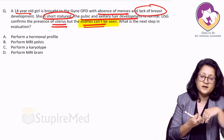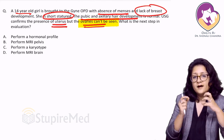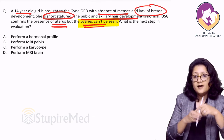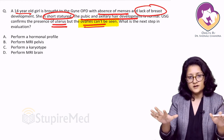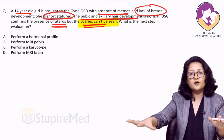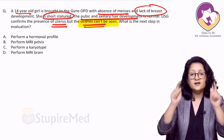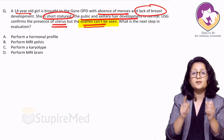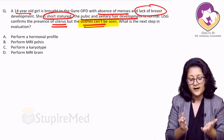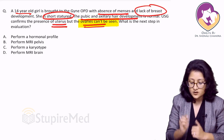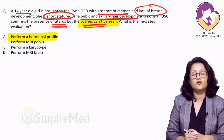What is the next step in evaluation? If there is estrogen deficiency, there can be two broad causes: ovaries not working, or a hypothalamic or pituitary cause. The way we differentiate between the two is by performing a hormonal profile. So in this case, we will go for a hormonal profile.